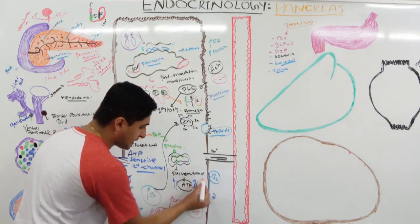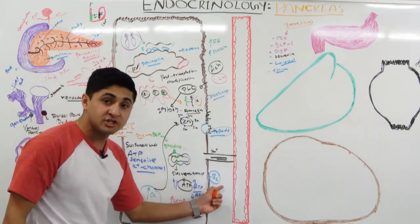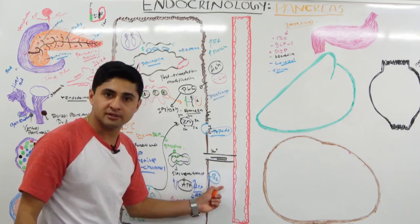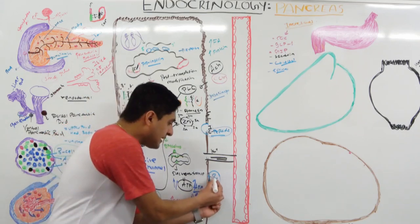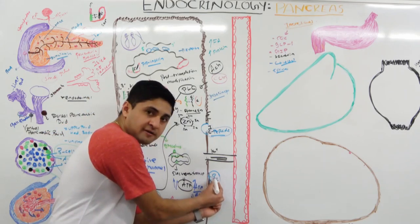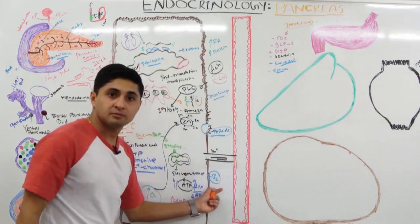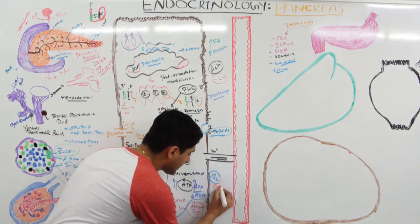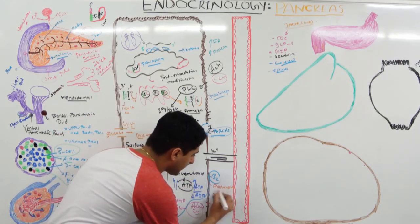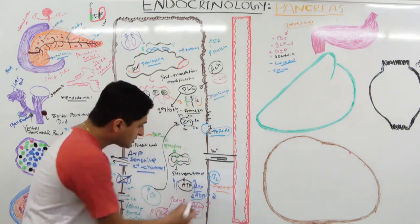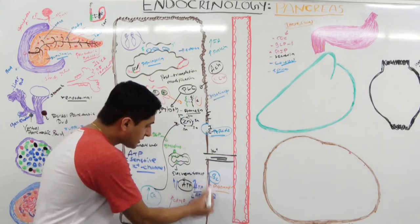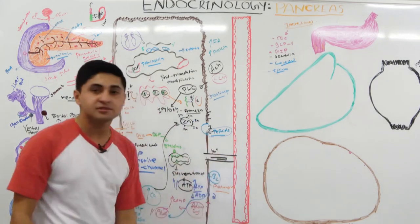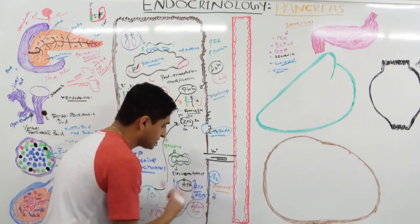Beta-adrenergic inhibitors like propranolol block the beta-2 receptor. When you give this drug, it reduces the secretion of insulin.